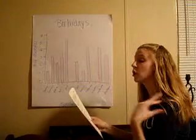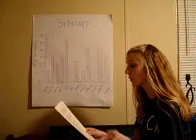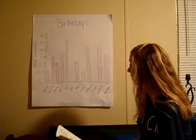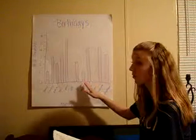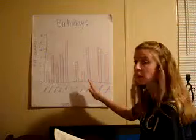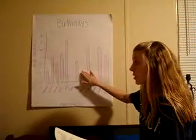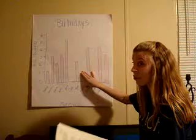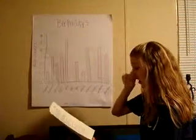If there were two more students with birthdays in August, how many students would have birthdays in August? If we're looking for two more, we need to know first how many are in August. In August, only one student has a birthday. So if we add two, two plus one would be three birthdays in August.